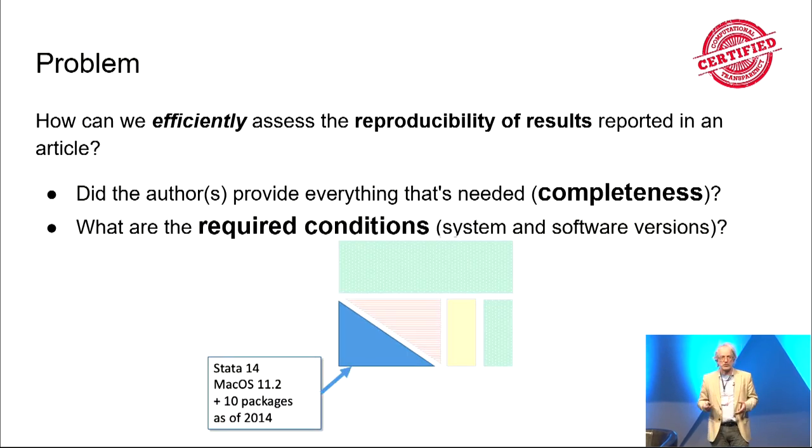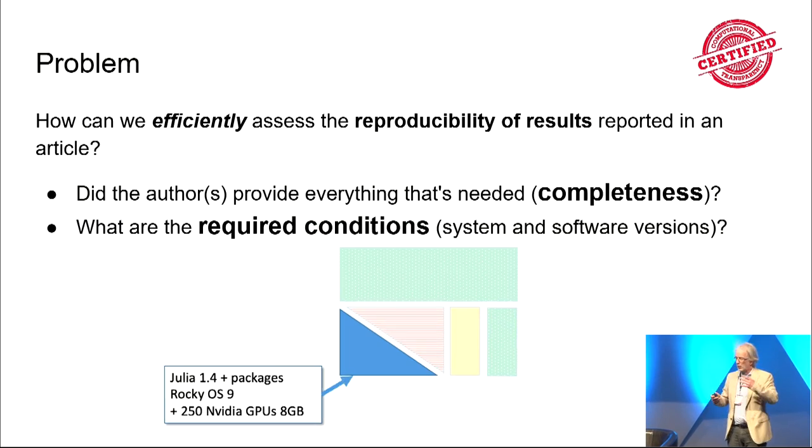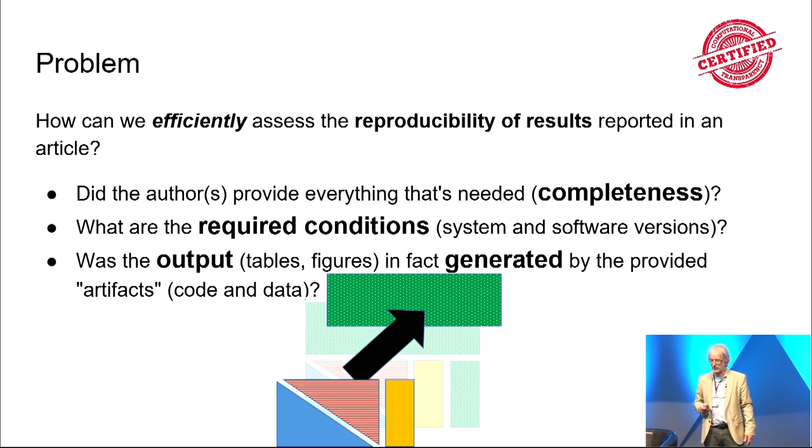What are the conditions to actually make it work? Do I need to worry about which version of Stata or Julia or GPUs or some other thing that are required to actually implement this? In the physical sciences, it might be the specific equipment we're thinking about. In the social sciences, we're typically talking about some computational stuff. And once I've combined all of those ingredients, does the code and the data and the computational environment actually produce the stuff that's in the paper?